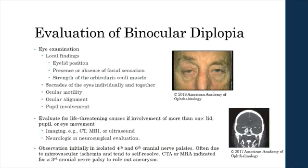Eye examination of binocular diplopia should include assessment of local findings such as eyelid position, presence or absence of facial sensation, and orbicularis oculi strength. Assess saccades of the eyes individually and together. Be sure to evaluate ocular motility, alignment, and pupil involvement. If a patient has abnormalities of more than one of the following — the lid, pupil, or eye movement — then evaluation for life-threatening causes with imaging and neurological or neurosurgical evaluation is necessary.